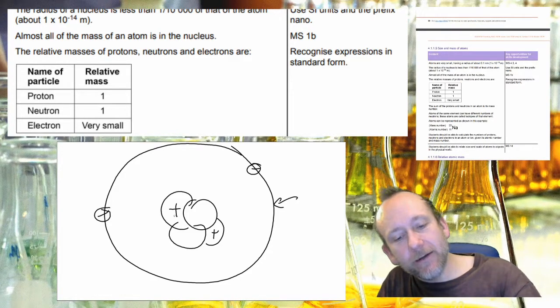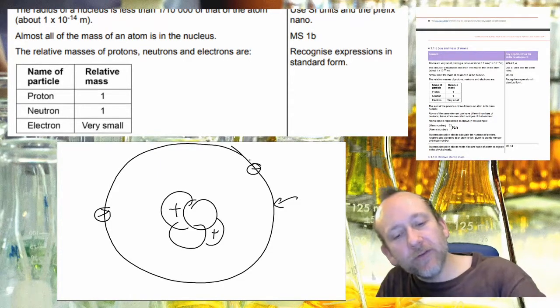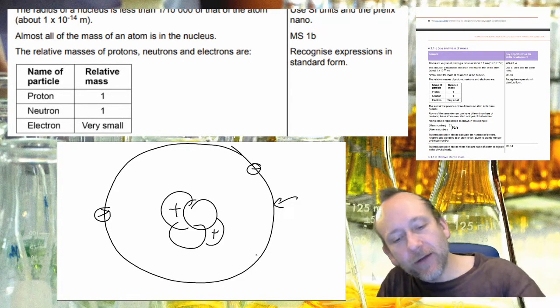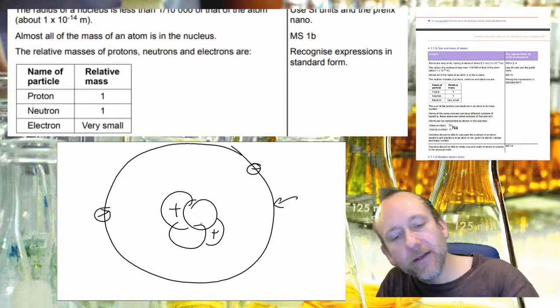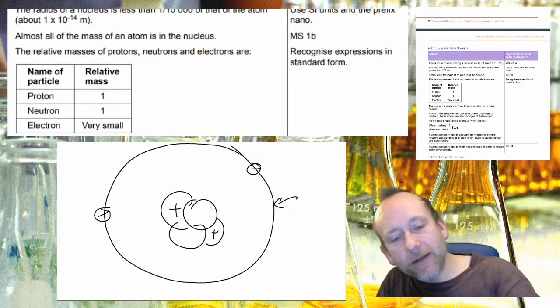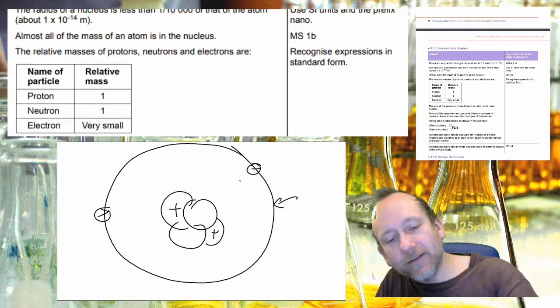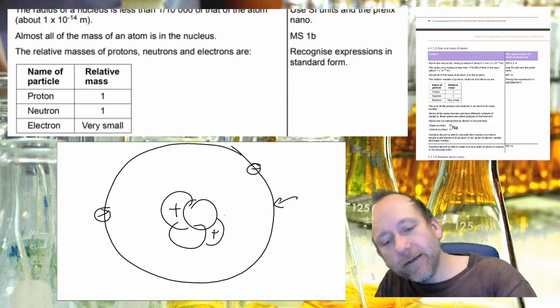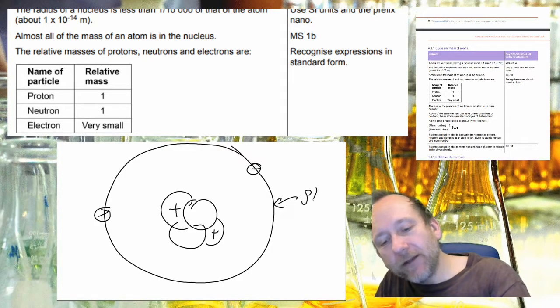So if you imagine this is the Sun, the solar system is quite analogous here. The Sun has most of the mass, the electrons are like the planets going around the outside and they're held in by a force as well. It's gravity in the case of the solar system and it's electrostatic attraction between positive and negative charges in this case.